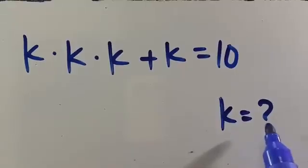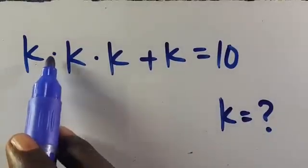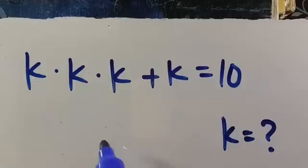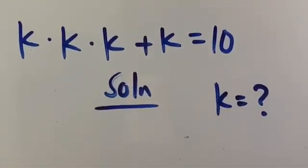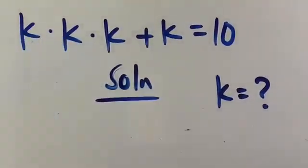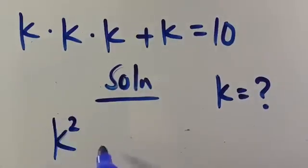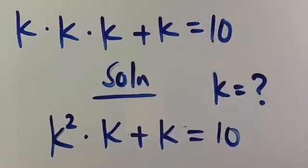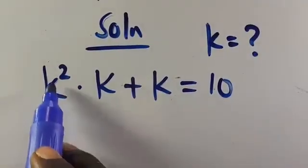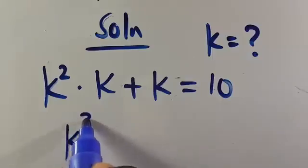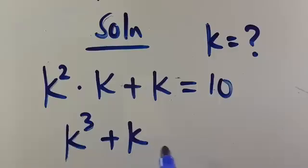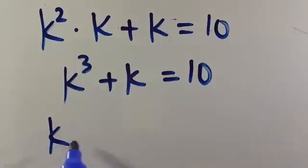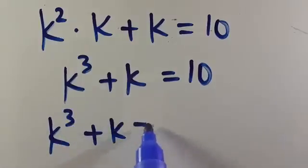Hi guys, you are welcome. We want to find the value of k given that k·k·k plus k equals 10. Let's go to the solution. From here, k times k gives us k squared, then k squared multiplied by k gives us k to the power of 3, so we have k³ plus k equals 10.